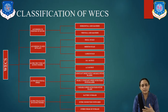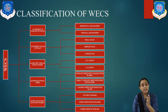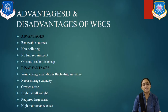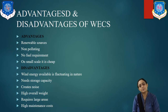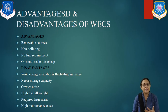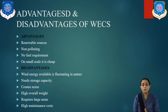You just have to remember that there are basically five types in the classification, with many more in each. Now, let us have the advantages and disadvantages of WECS. The advantages are: it is a renewable source, available everywhere, and can be generated using very small equipment. It is non-polluting and cannot pollute the air.